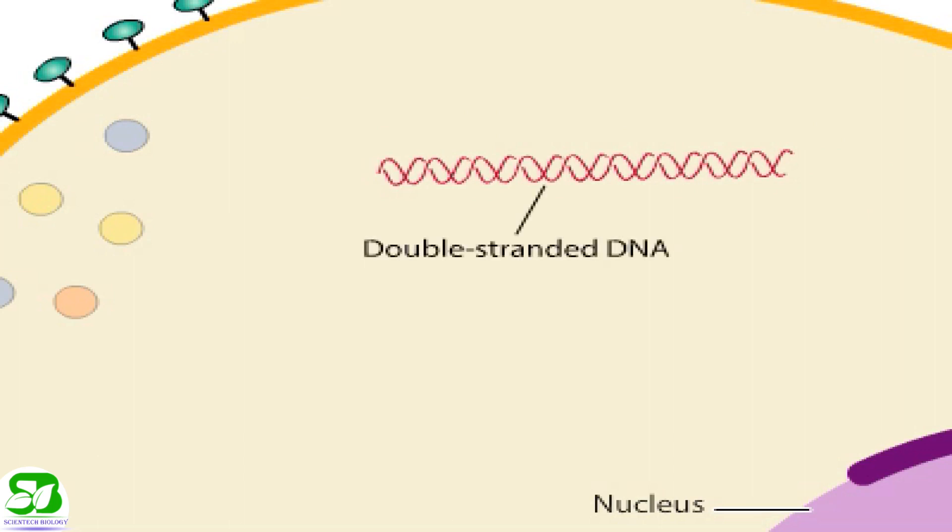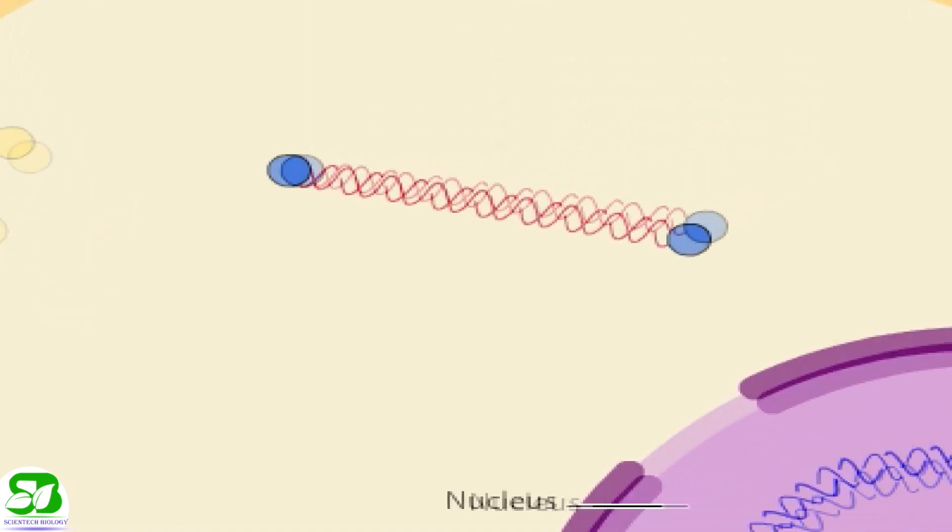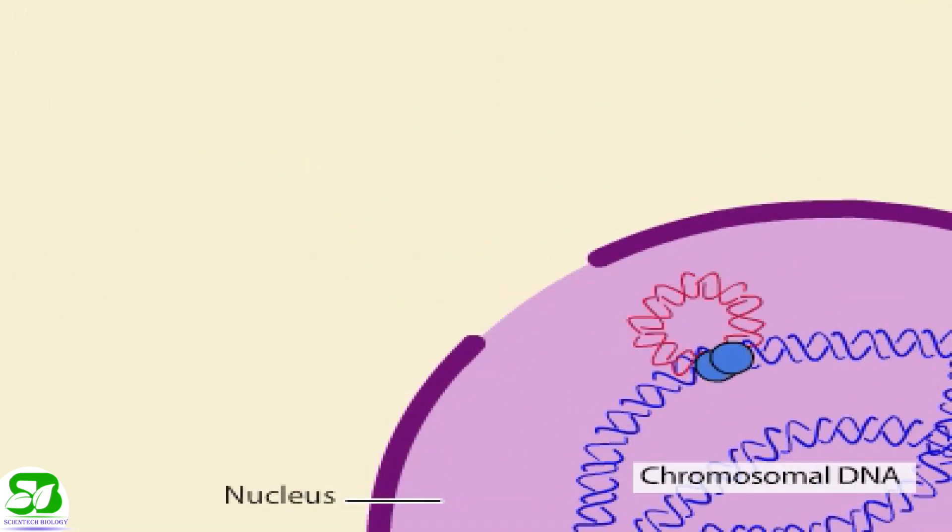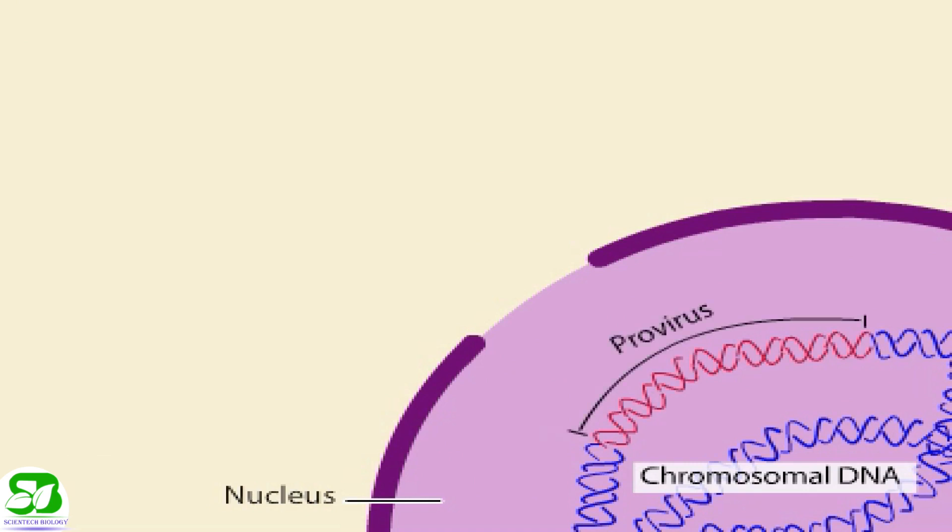The double-stranded viral DNA enters the nucleus with several types of viral proteins including an enzyme called integrase. Integrase enzyme splices the viral DNA into the host cell chromosomal DNA. The integrated viral DNA is known as provirus.